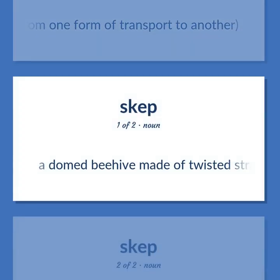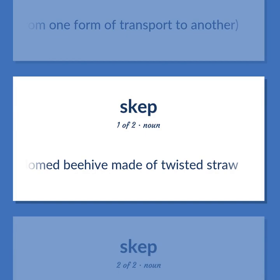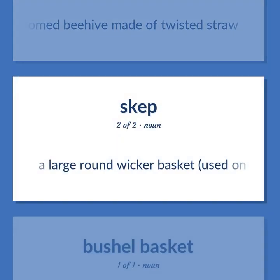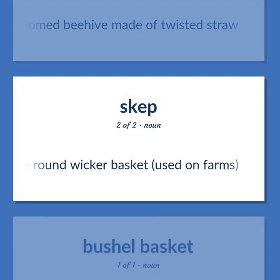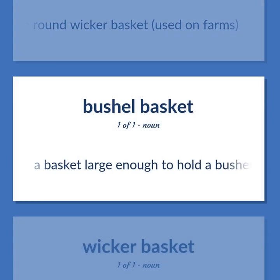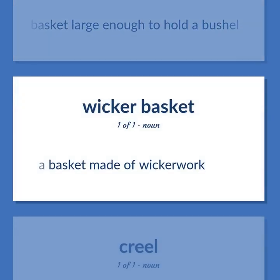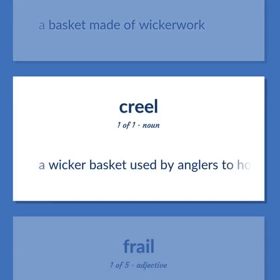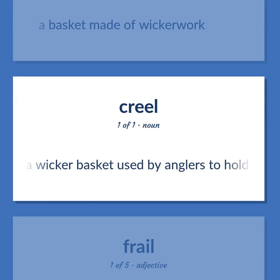Basket types: a domed beehive made of twisted straw. A large round wicker basket used on farms. A basket large enough to hold a bushel. A basket made of wickerwork. A wicker basket used by anglers to hold fish.